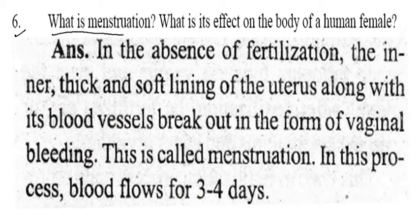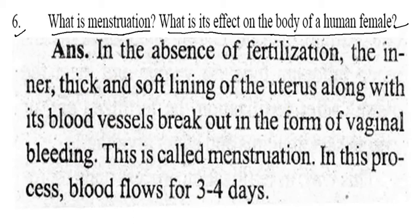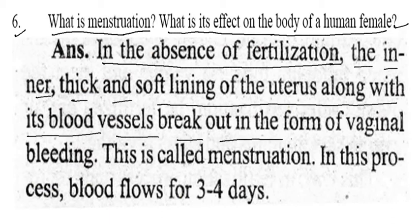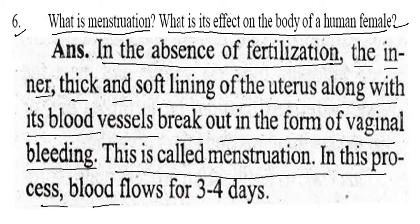What is menstruation, and what is the effect on the body of a human female? In the absence of fertilization, the inner thick and soft lining of the uterus, along with its blood vessels, breaks out in the form of vaginal bleeding. This is called menstruation. In this process, blood flows for 3–4 days.